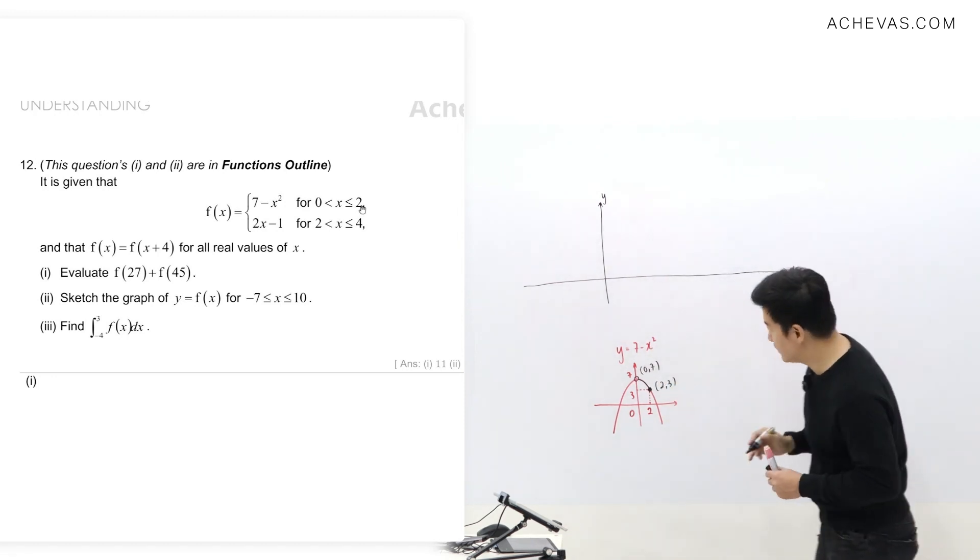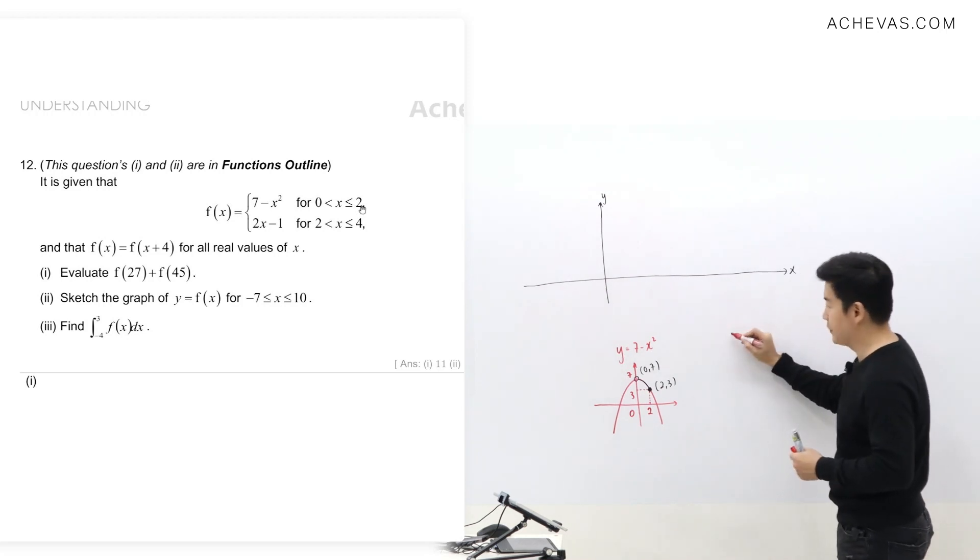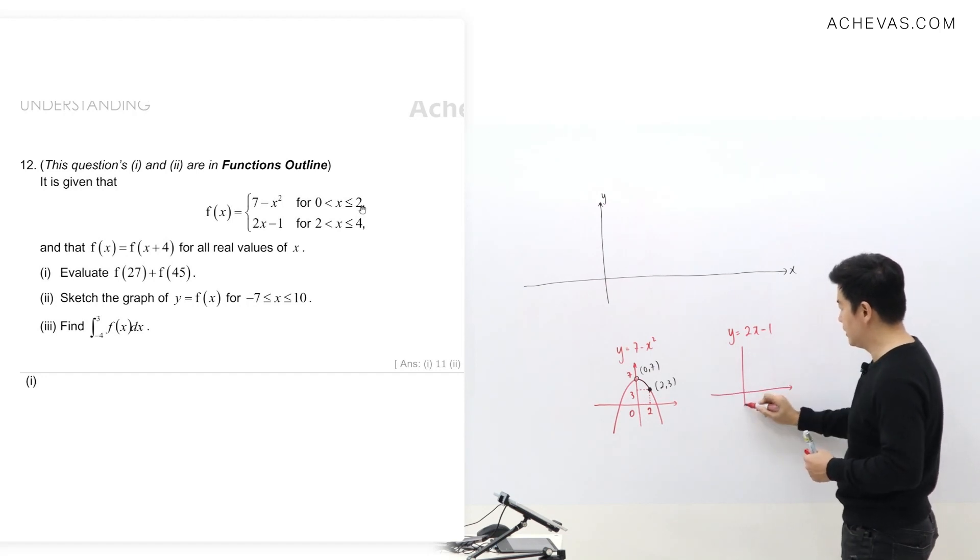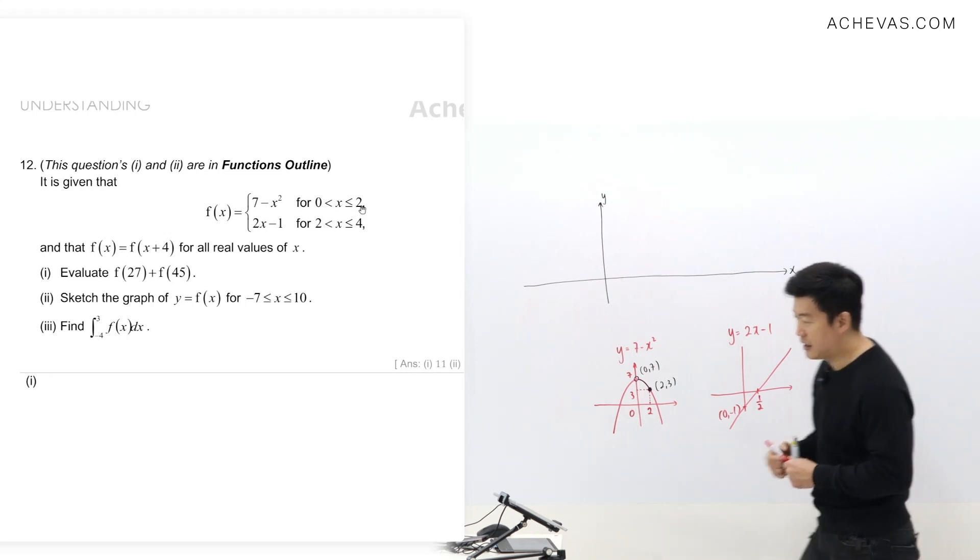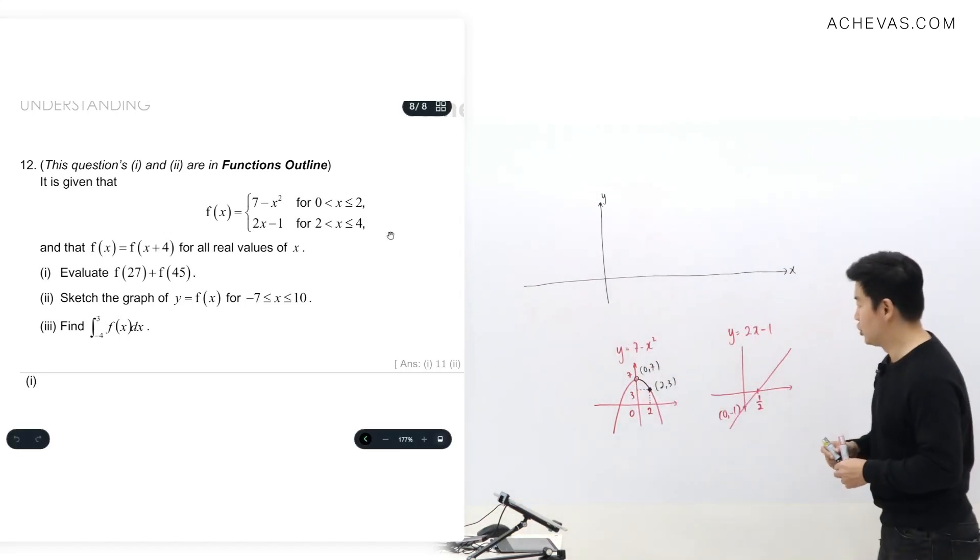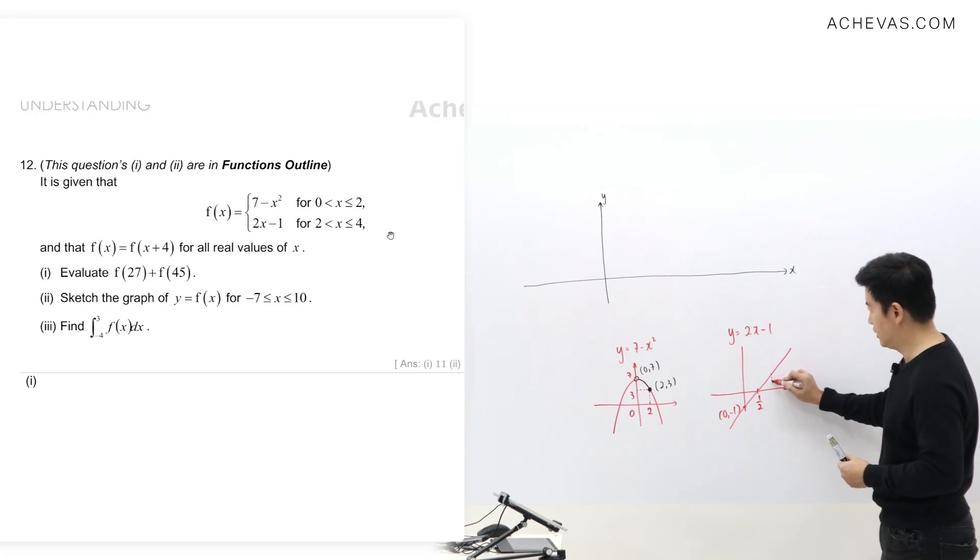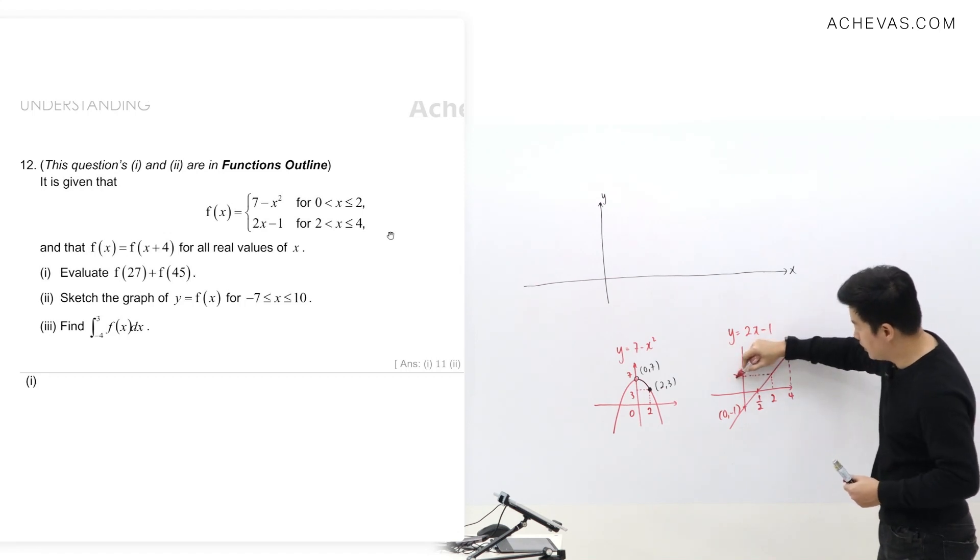The other one is y equals 2x minus 1. This graph is a line where the y-intercept is at negative one and the x-intercept is at one-half. The part that I want is from two to four. When I substitute two in, this gives three. When I substitute four in, 2(4) minus 1 equals seven.